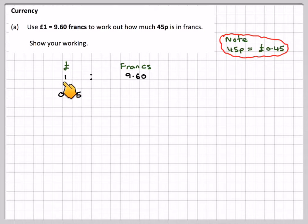How do we go from 1? What do you have to multiply 1 by to get 0.45? The answer is 0.45. Now because you've done it to that side, you need to do it to this side of the ratio.